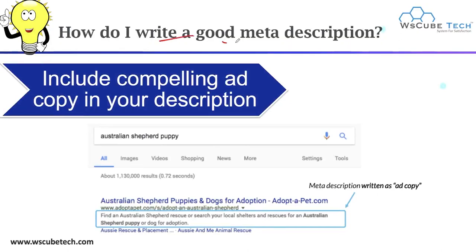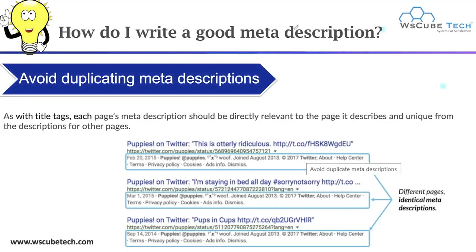How do you write a good meta description? Here are some steps to follow if you want to optimize your meta description. First, you have to include compelling copy in your description. Next, you have to avoid duplicating meta descriptions.